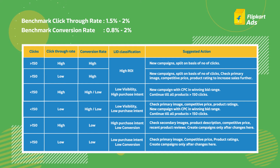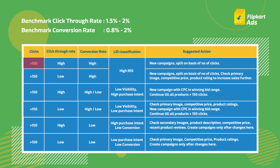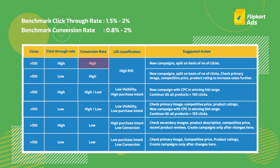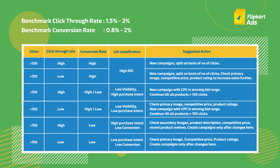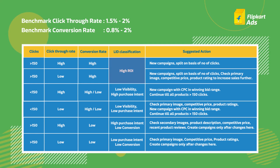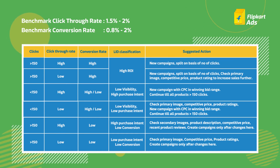Listings with over 150 clicks and high click-through rate and conversion rate — these are your high ROI listings. Create new campaigns and split them on the basis of number of clicks.